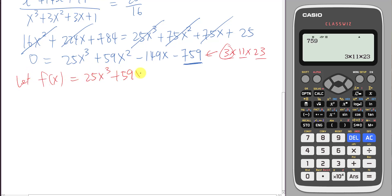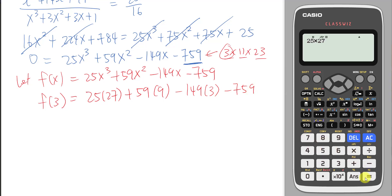I will just copy it real quick. Then I will try to insert the 3 into it, see whether I will get zero or not. So this one is 25 times 27 plus 59 times 9 minus 149 times 3 minus 759. I get zero. If I get zero factor theorem tell me that therefore x minus 3 is the factor of f(x).